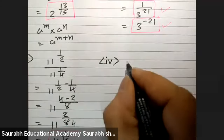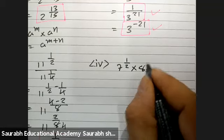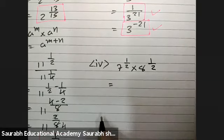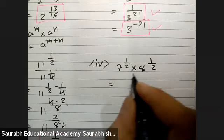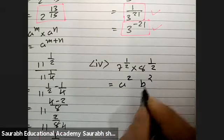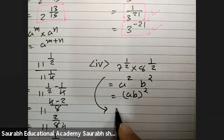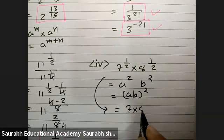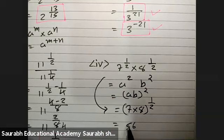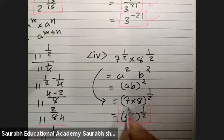Now the 4th: 7 raise to 1 by 2 into 8 raise to 1 by 2. Understand — what rule applies here? A raise to 2 into B raise to 2 equals AB raise to 2. Just the same thing we do here: 7 into 8 raise to 1 by 2, giving 56 raise to 1 by 2. Answer: 56 raise to 1 by 2.